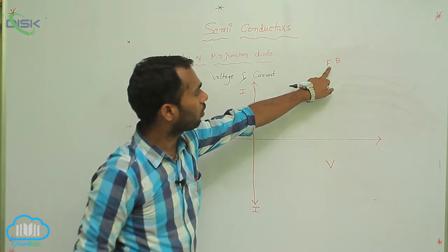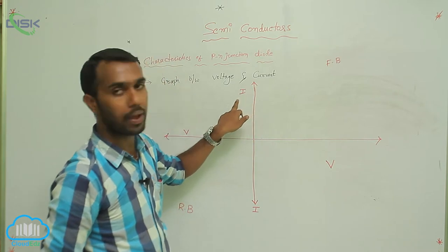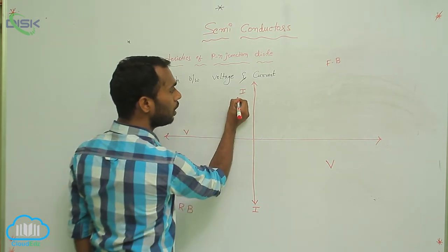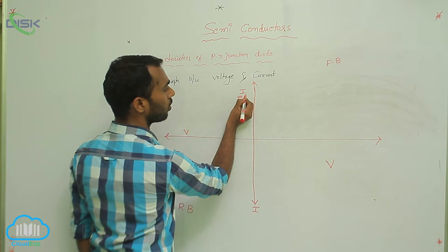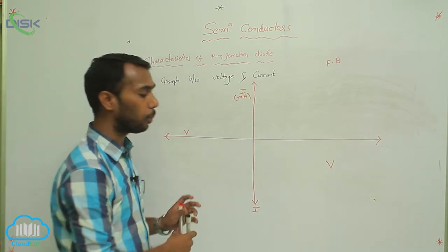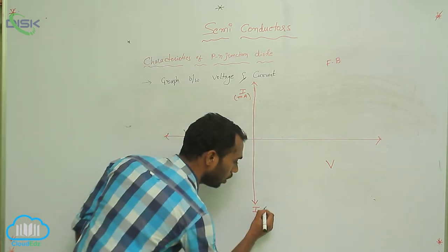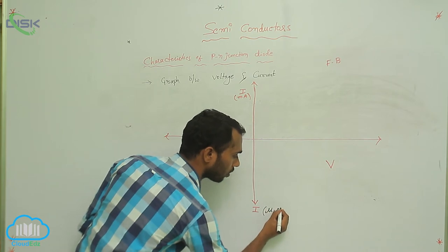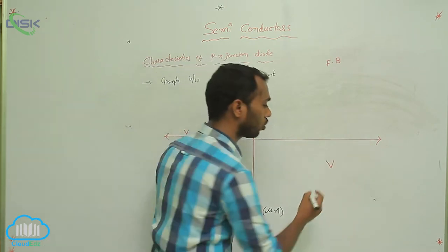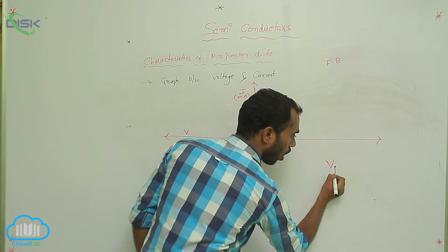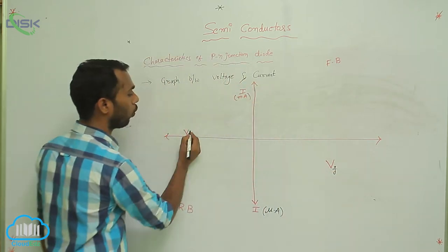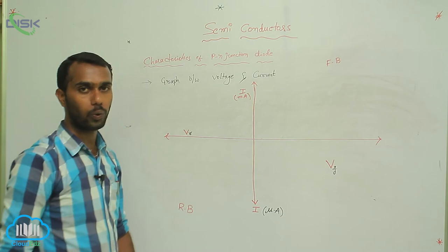In forward bias, current measures in milliampere. In forward bias, voltage is called forward voltage. In reverse bias, voltage is called reverse voltage.